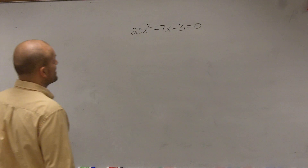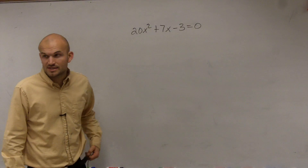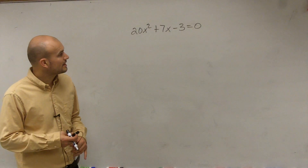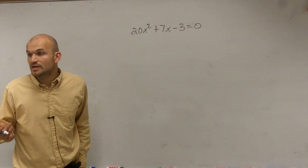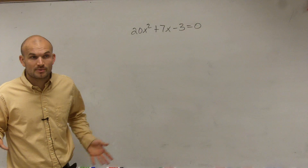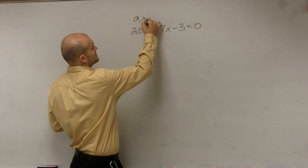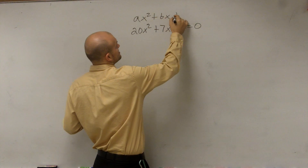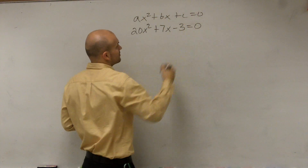Alright, so for this problem I have 20x squared plus 7x minus 3, and the main important thing I'm going to want to do is make sure it's in quadratic form, which of course it is. We can write this as ax squared plus bx plus c equals 0.